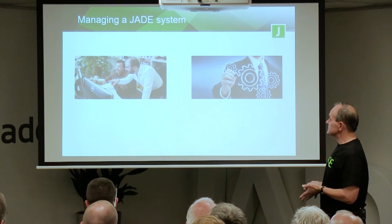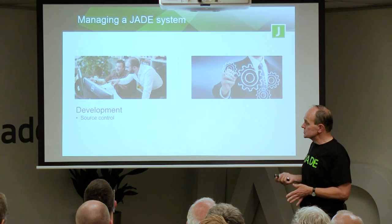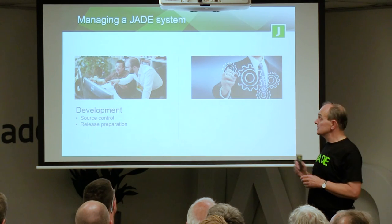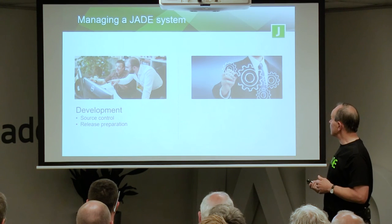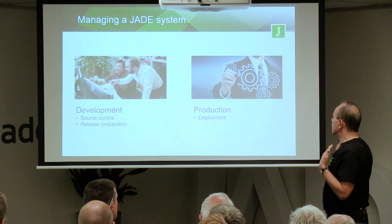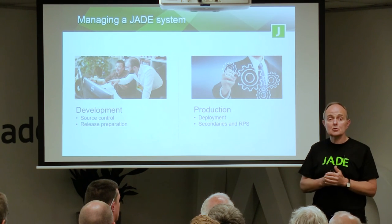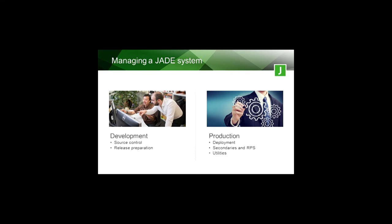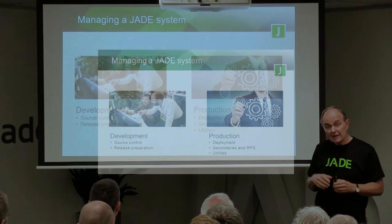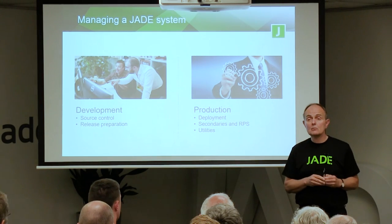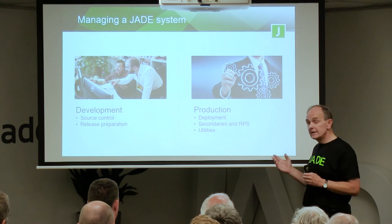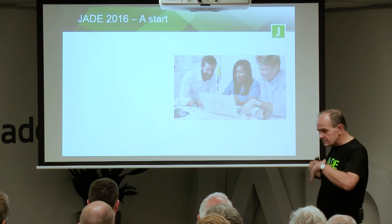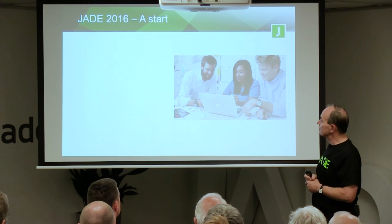In terms of managing Jade Systems, there are two areas we're going to look at. On the development side, things such as source control and release preparation can take up a lot of development resource, so we're going to try and reduce that. In terms of production, there's deployment, secondaries, and RPSs — these things all take time to manage and there are complexities we think we can pull out. And lastly, the utilities — we want to make them easier to use. If we're going to prosper in an environment where people are using the cloud, we've got to make the utilities easier and quicker to use.